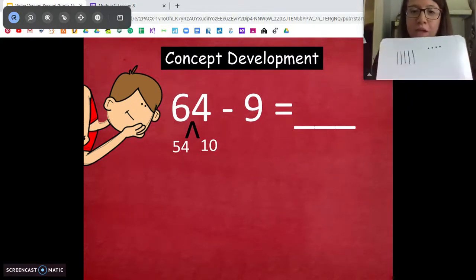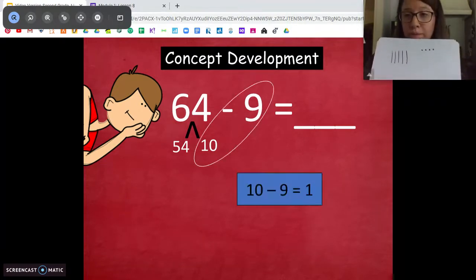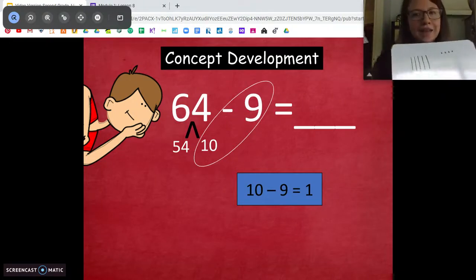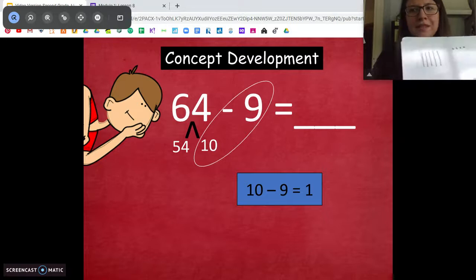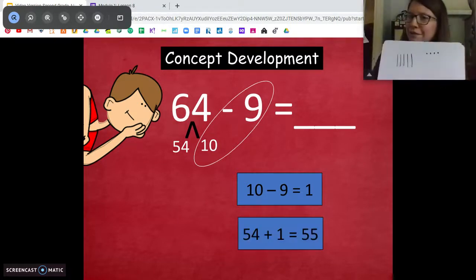I'm going to do the same thing I always do first. Take out, do my 10s fact. 10 minus 9 is 1. Now my other part is this big number 54. But the only thing I'm adding to that 54 is 1. 54 plus 1, that's super easy. 55. And we got it. Good job.